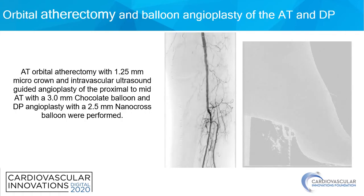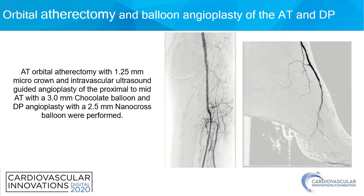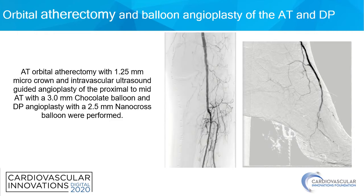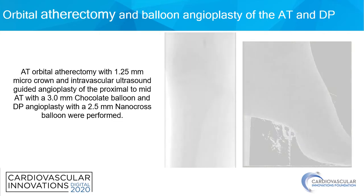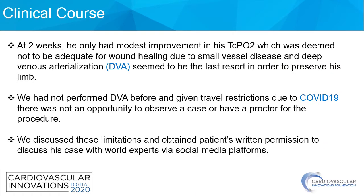He underwent orbital atherectomy of the AT with a 1.25 mm micro crown and intravascular ultrasound guided angioplasty of the proximal to mid-AT with a 3 mm chocolate balloon and DP angioplasty with a 2.5 mm nanocross balloon. At 2 weeks, he only had modest improvement in his TCPO2, which was deemed not adequate for wound healing due to small vessel disease, and deep venous arterialization seemed to be the last resort in order to preserve his limb.